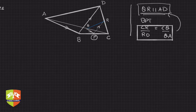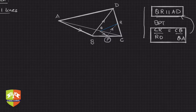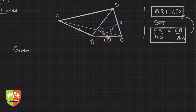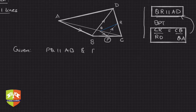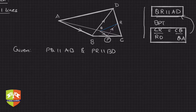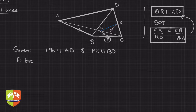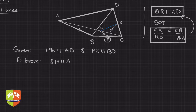Now the rituals: what is given? PQ is parallel to AB, and PR is parallel to BD. To prove: QR is parallel to AD. Here goes the proof.